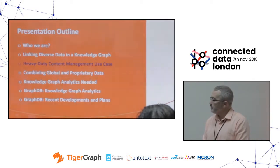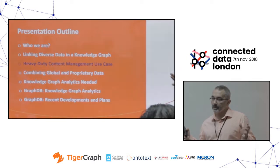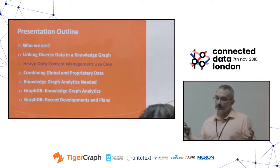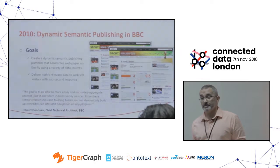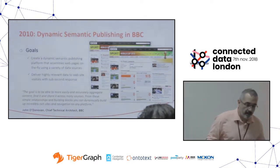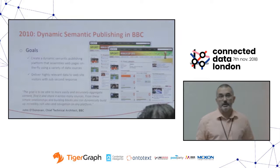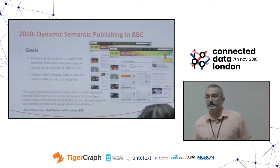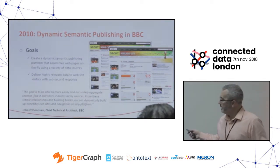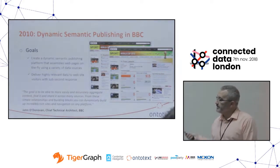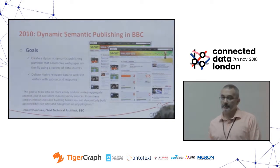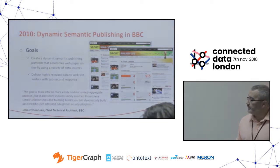So much about putting the big knowledge graph together. The question is: what do you do with it? One of the use cases is what a colleague of ours, Jim Rayfield, defined as dynamic semantic publishing back in 2010. The concept: imagine you have tons of content. The first project was for the football World Cup 2010.